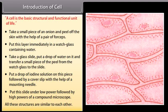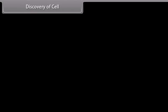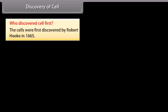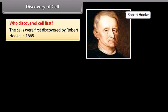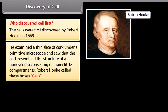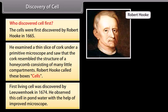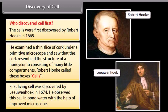Who discovered the cell first? Cells were first discovered by Robert Hooke in 1665. He examined a thin slice of cork under a primitive microscope and saw that it resembled the structure of a honeycomb consisting of many little compartments — he called these boxes 'cells'. The first living cell was discovered by Leeuwenhoek in 1674, who observed it in pond water with the help of an improved microscope.